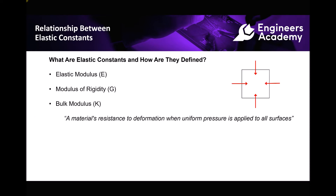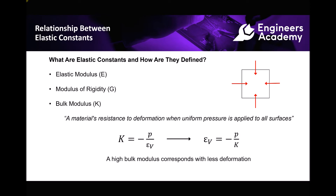The next elastic constant is our bulk modulus. Bulk modulus is a material's resistance to deformation when uniform pressure is applied to all surfaces. We have a small diagram in the top right hand corner to demonstrate this. The formula states that bulk modulus equals minus pressure divided by volumetric strain. We can rearrange that equation to make volumetric strain the subject, giving volumetric strain equals minus pressure over the bulk modulus. The reason we have a minus sign is because if a pressure is being applied to the outside of an object, the volume of that object is going to decrease.